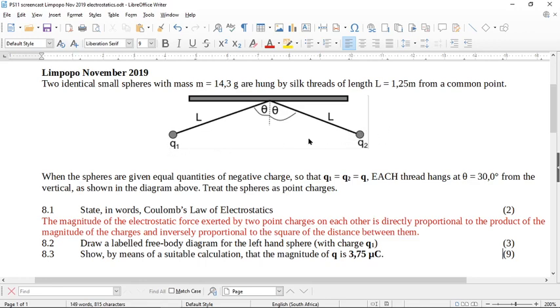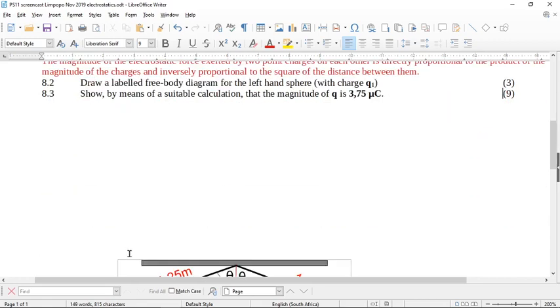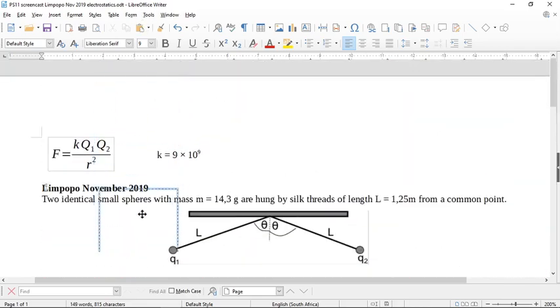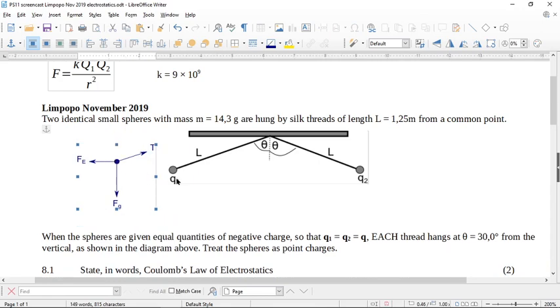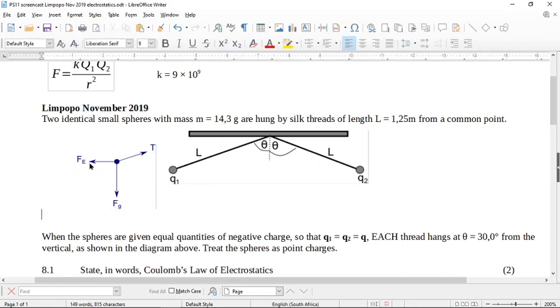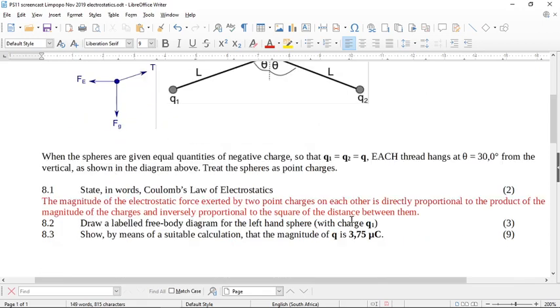So this Q2 is pushing this Q1 in that direction. So to draw your free body diagram, this is what your free body diagram is going to look like. Here is going to be your weight acting downwards, Fg. There's your tension in the string acting up the string, and there is your electrostatic force, and these two are having equal and opposite forces, and Q2 is pushing Q1 in that direction there. And we call this Fe for F electrostatic. So there is our labeled free body diagram.